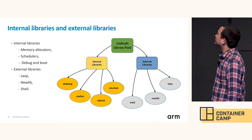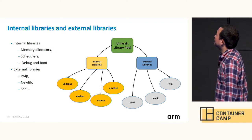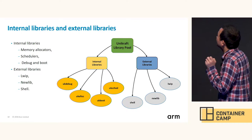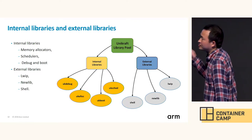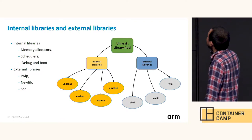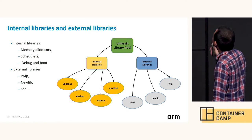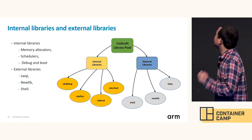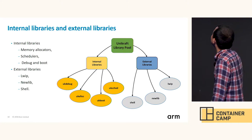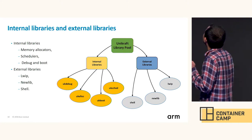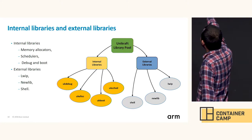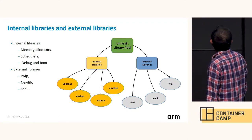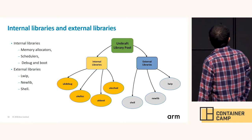From a development perspective, UniKraft libraries can be developed in two parts. The first is internal libraries, the second is external libraries. Currently, most OS functionality libraries — debug, memory allocation, port, and schedulers — have been implemented as internal libraries.